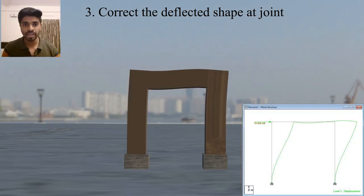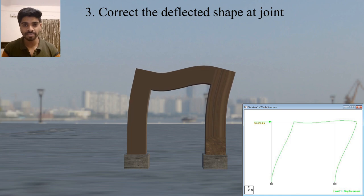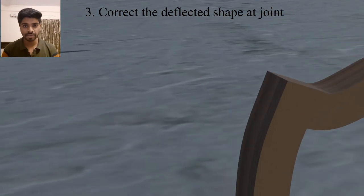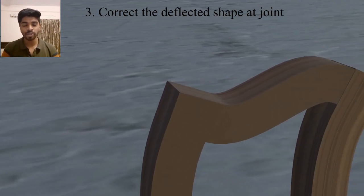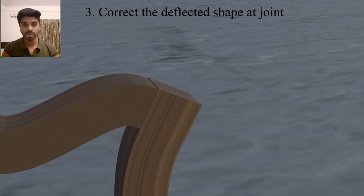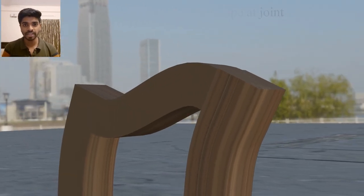I will cover this concept of bending moment diagram in the next upcoming videos. So with this, our third step also finished, that is to correct the deflected shape at the beam column joint.